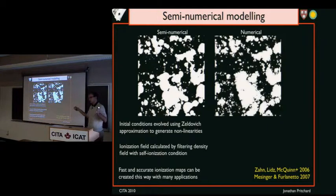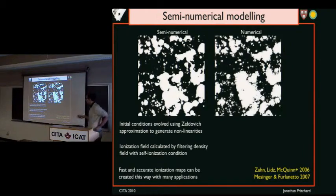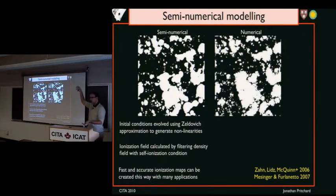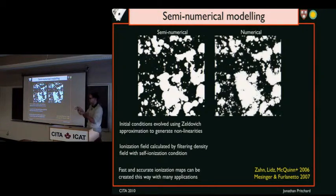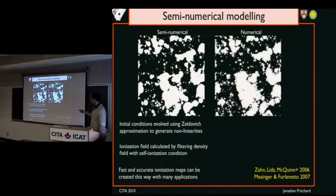In the excursion set formalism, you take a pixel of gas, draw a sphere around it, and ask: does it contain enough galaxies to ionize all the hydrogen within that sphere? If yes, it will be ionized. If no, you draw a smaller sphere and keep going until you either run out or the gas will be neutral. In this way, you can get fairly accurate ionization maps quite quickly. This semi-numerical approach gives large-scale features very similar to the full numerical calculation — it's only on small scales that there's significant disagreement. You'd like to do something similar to incorporate things like Lyman-alpha and X-ray photons.